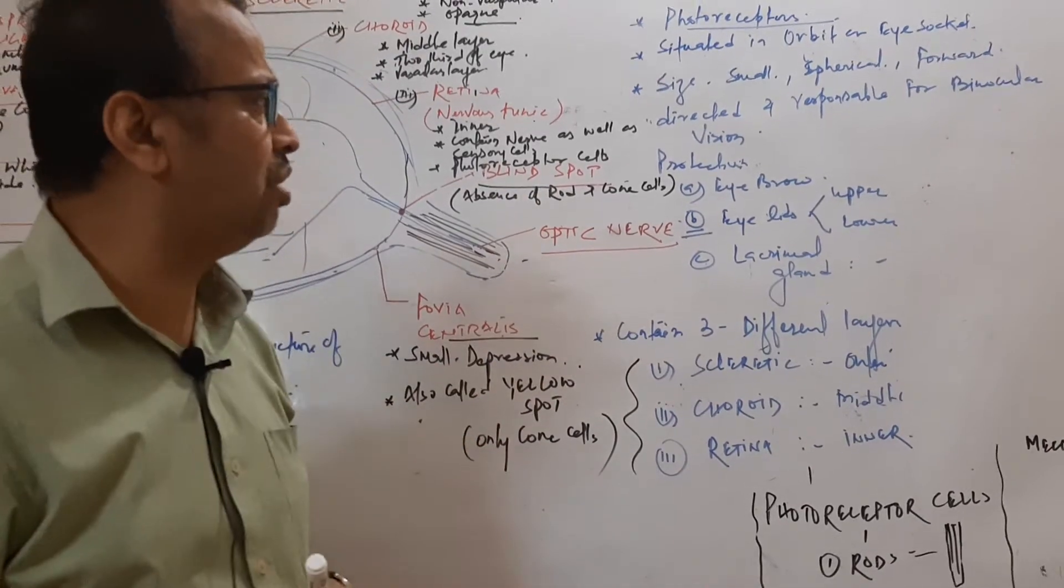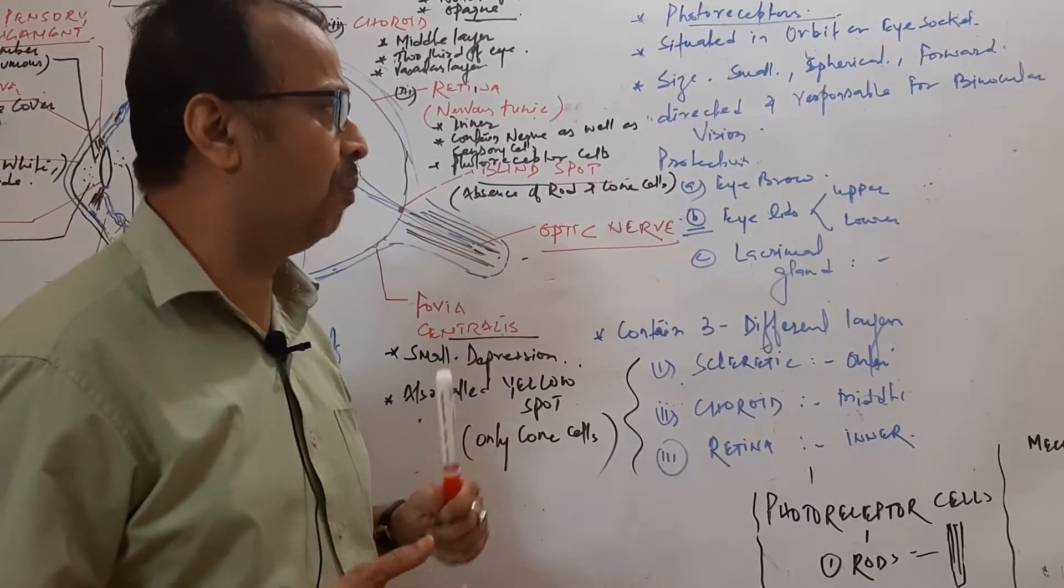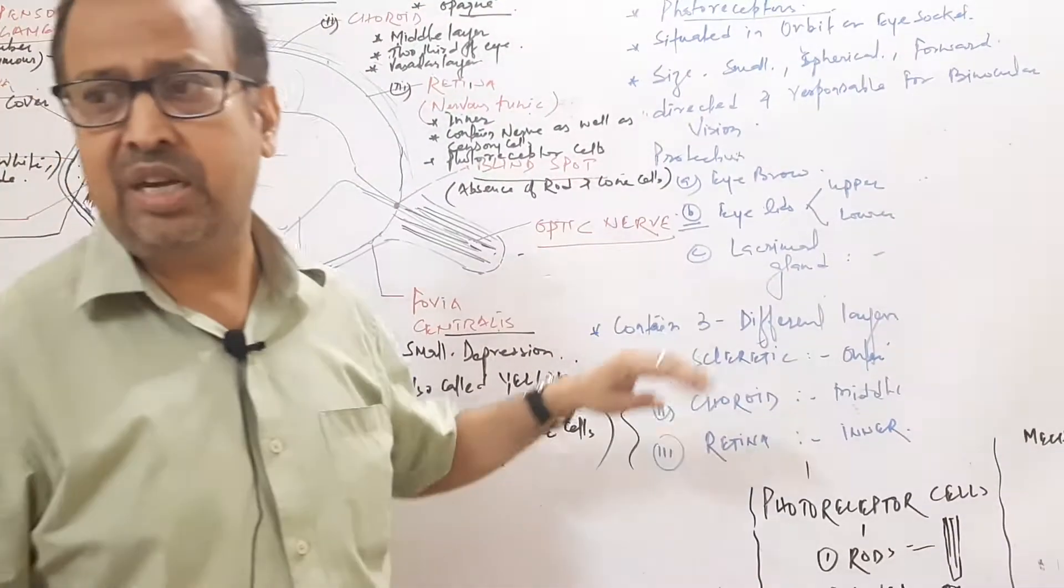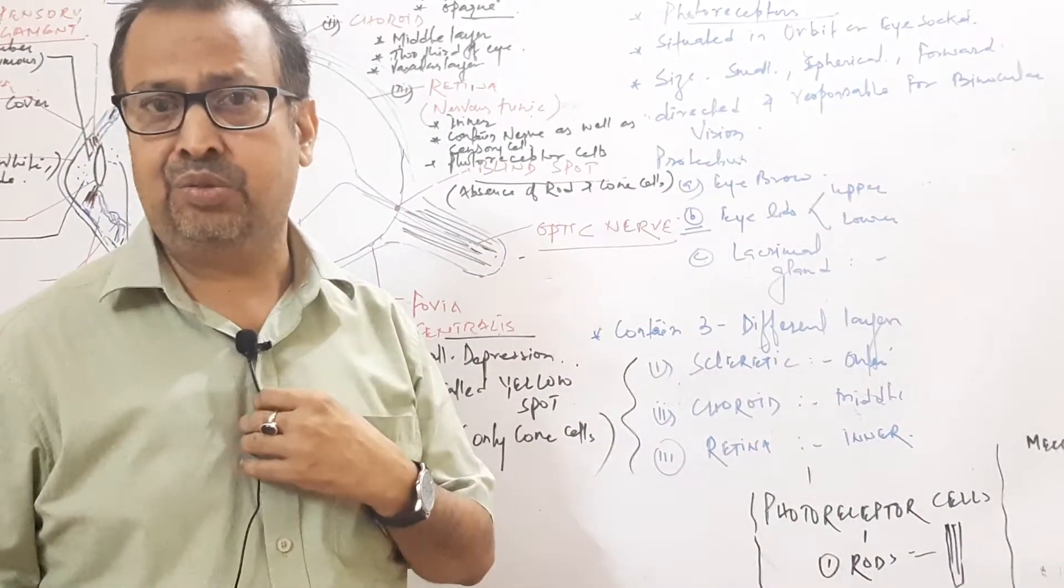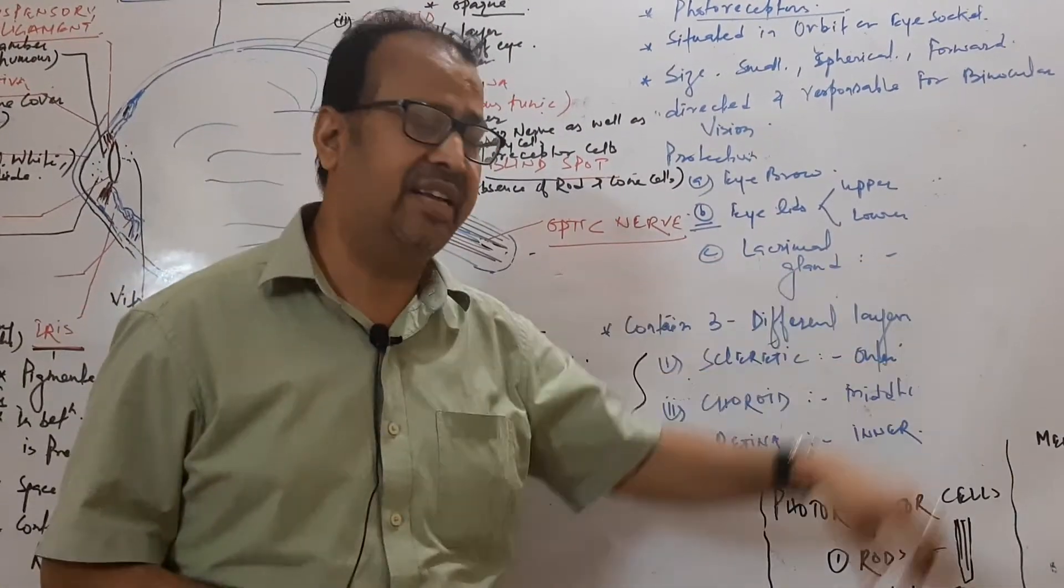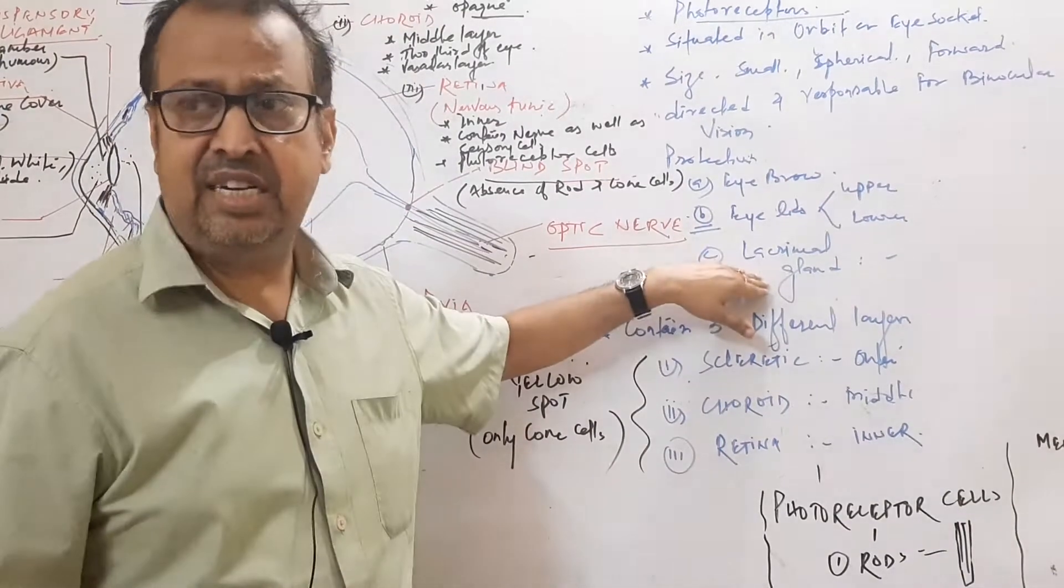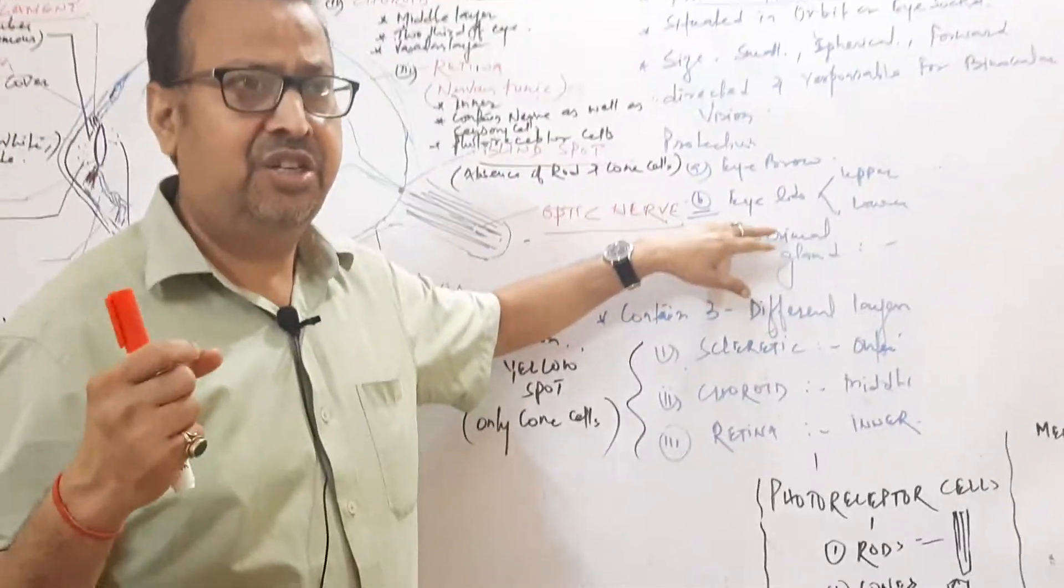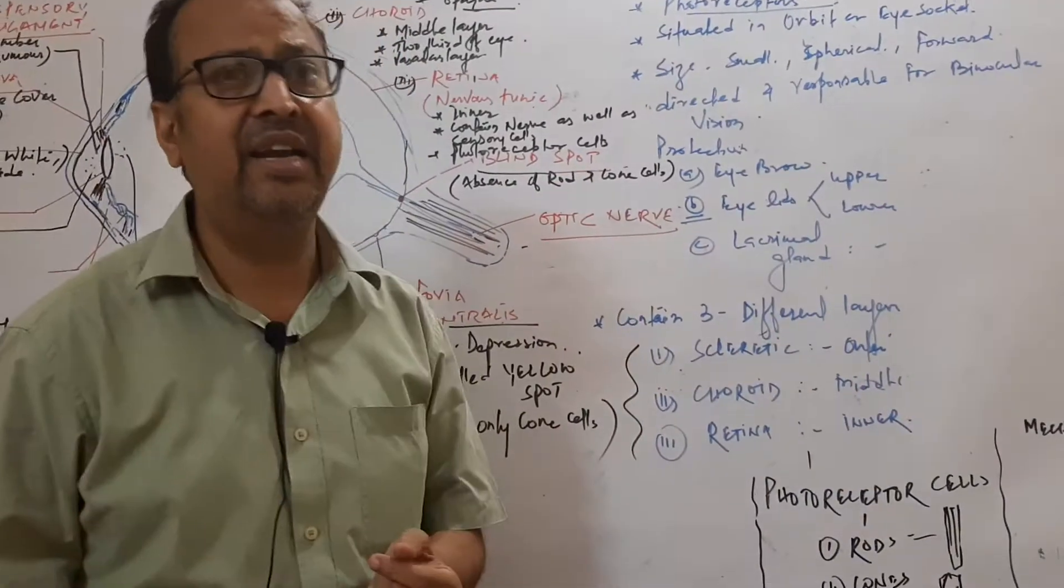It is protected through the eyebrows, eyelids upper and lower, and eyelashes. It also contains glands called lacrimal gland, Meibomian gland, and Zeis gland, where lacrimal gland secretes what we call tears, and Meibomian gland secretes oily secretion which helps in the free movement of eyes.